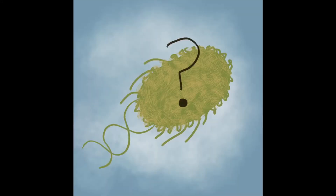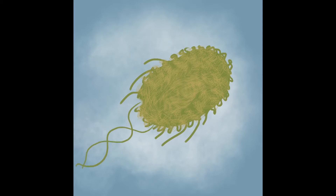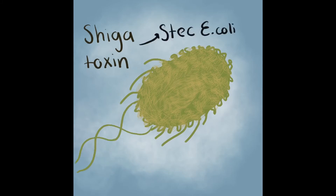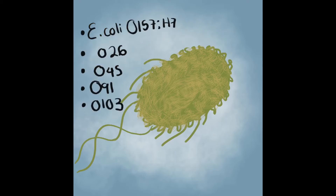But what makes E. coli so important? Most E. coli strains are harmless; however, there are some strains that can become deadly. This is because of a characteristic these pathogenic strains contain — they produce a toxin called Shigatoxin. These strains are called STEC, meaning Shigatoxin-producing E. coli. E. coli O157H7 is the most common strain to cause infections in humans. To name a few more pathogenic strains, there is also O26, O45, O91, and O103. There are over 100 strains that produce this toxin.